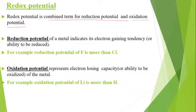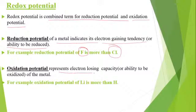What is Reduction Potential? Reduction potential of a metal indicates its electron-gaining tendency or ability to reduce. For example, the Reduction Potential of Fluoride is greater than Chlorine. Similarly, Oxidation Potential represents electron-losing capacity — for example, Lithium is more than Hydrogen.